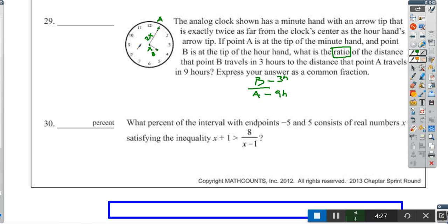We want the ratio of travel of point B over travel of point A. B for 3 hours, A for 9 hours. We're tracking this point 9 times around. Distance point A travels is the circumference, which equals diameter times pi. If the radius is 2X, diameter is 4X, so circumference is 4X times pi. It goes around 9 times, so we get 36X times pi.